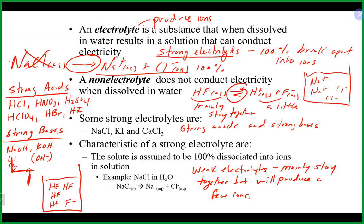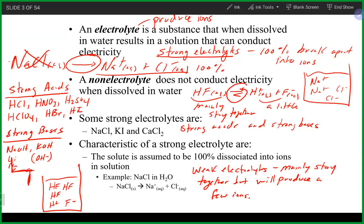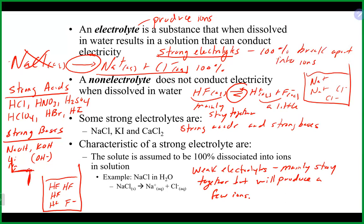Most weak electrolytes will stay together in solution rather than break apart into ions. Lastly, non-electrolytes are things that will dissolve in solution — like sugar — but produce no ions. Because they produce no ions, non-electrolytes will not conduct electricity. Those ions are really the crucial part that allows conduction of electricity. It's really important to be able to identify strong electrolytes, weak electrolytes, and non-electrolytes when dealing with double displacement and single replacement reactions.